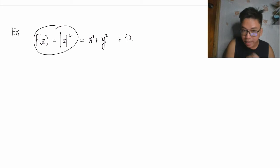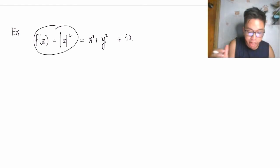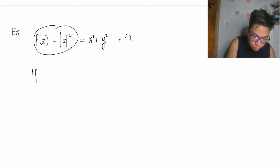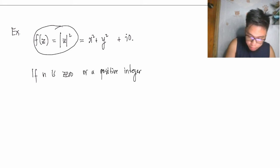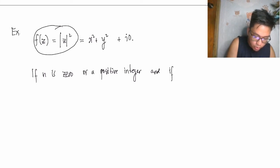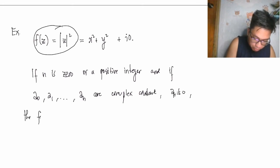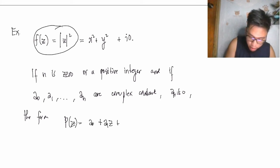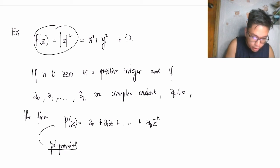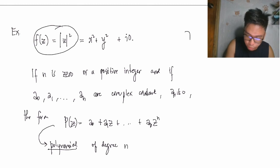If n is zero or a positive integer, and a₀, a₁, …, aₙ are complex constants with aₙ ≠ 0, then the form P(z) = a₀ + a₁z + … + aₙzⁿ is called a polynomial — specifically a complex polynomial of degree n.